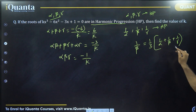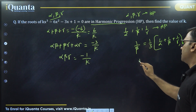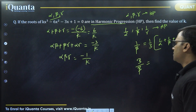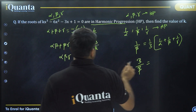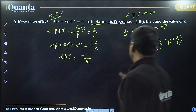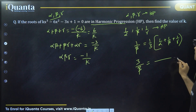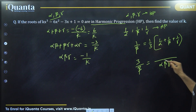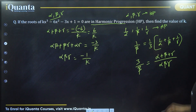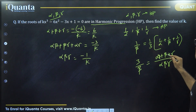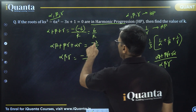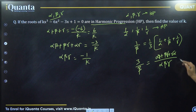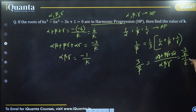Because we want to use all three terms, 3 divided by beta equals 1 by alpha plus 1 by beta plus 1 by gamma, which simplifies to alpha beta plus beta gamma plus gamma alpha divided by alpha beta gamma. Now alpha beta plus beta gamma plus gamma alpha is minus 3 by k, and alpha beta gamma is minus 1 by k. So this becomes minus 3 by k divided by minus 1 by k. The minus signs cancel, k cancels, and 3 cancels, so beta is equal to 1.